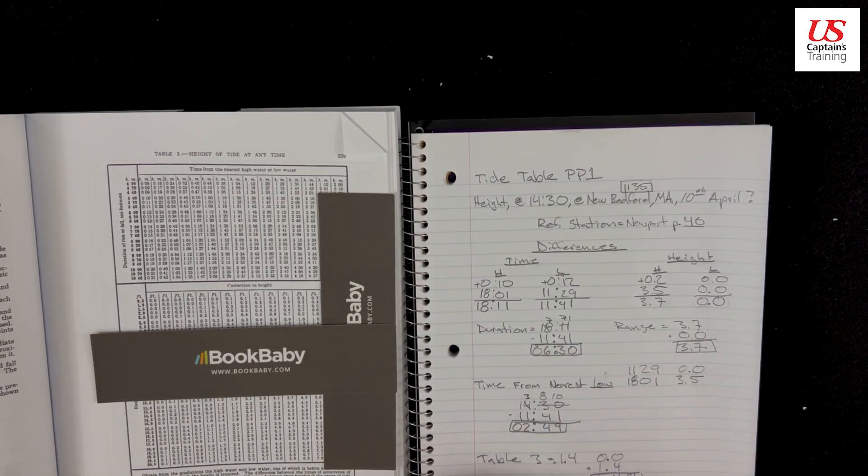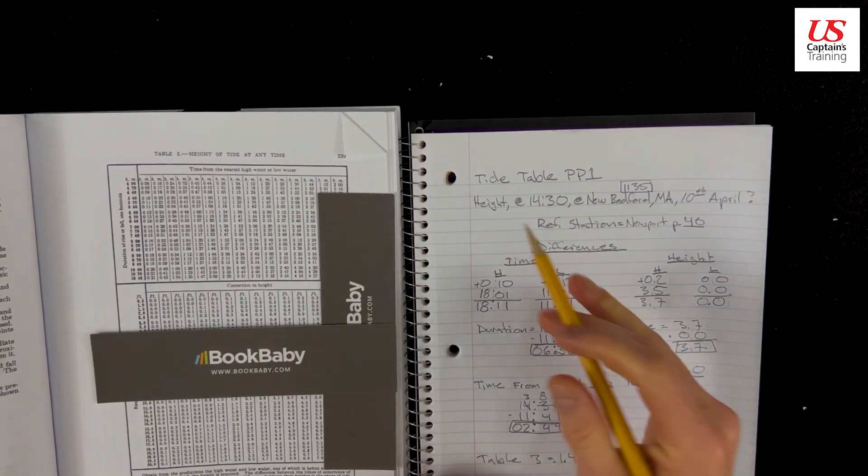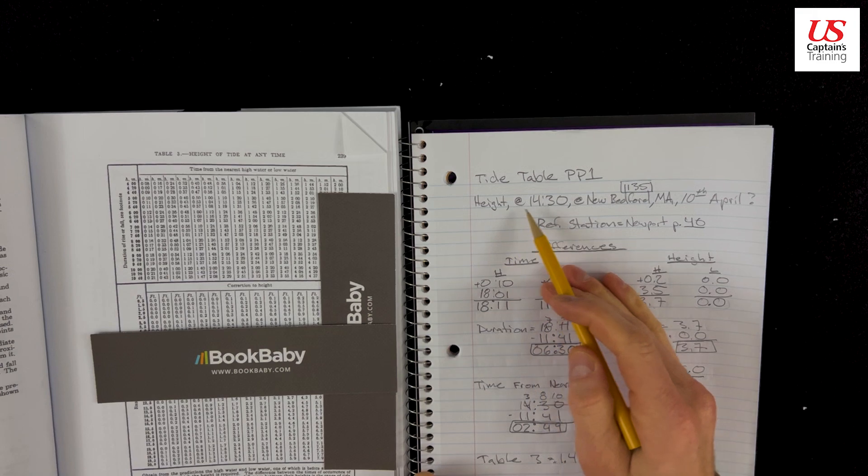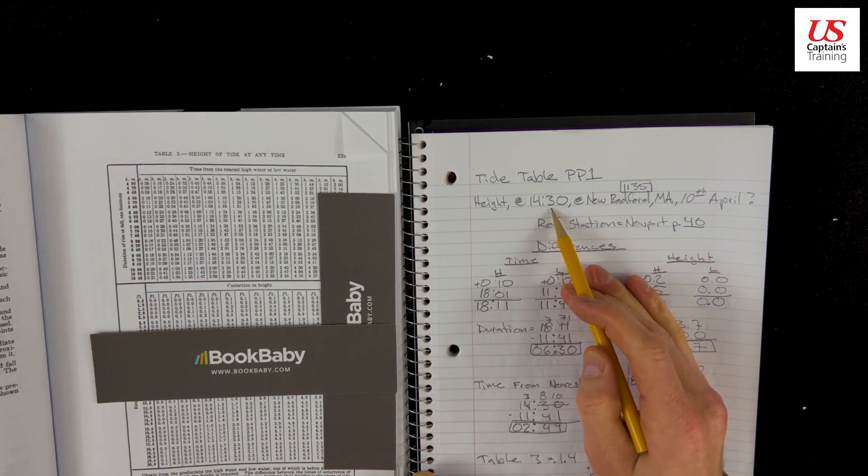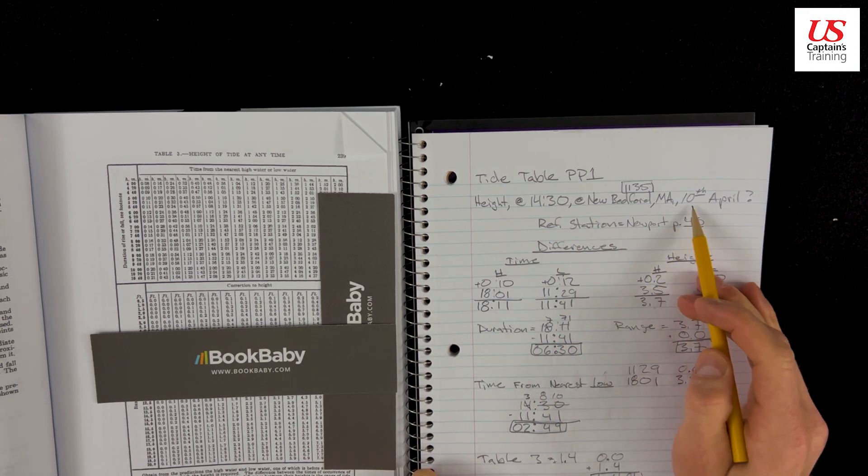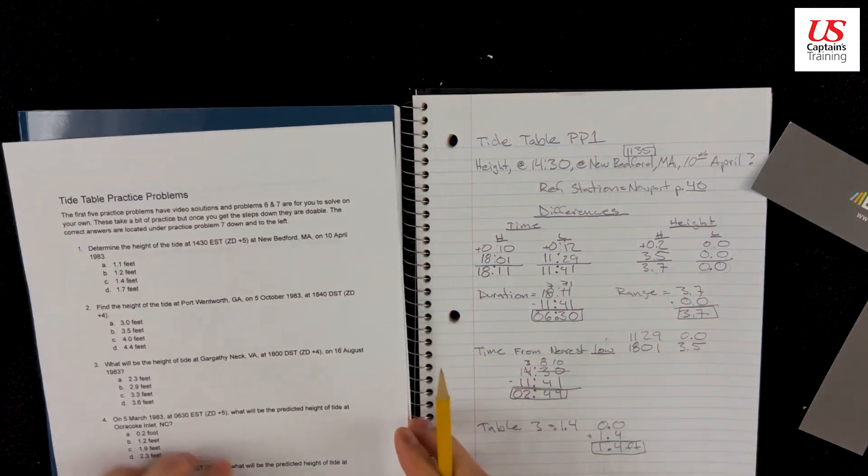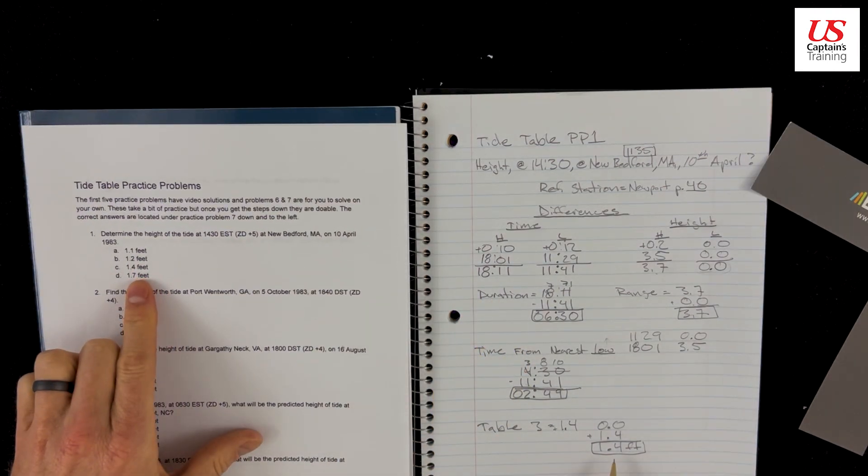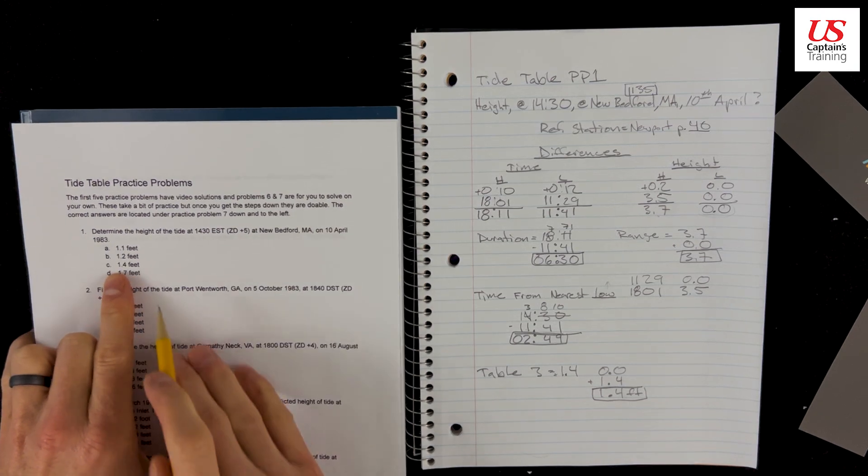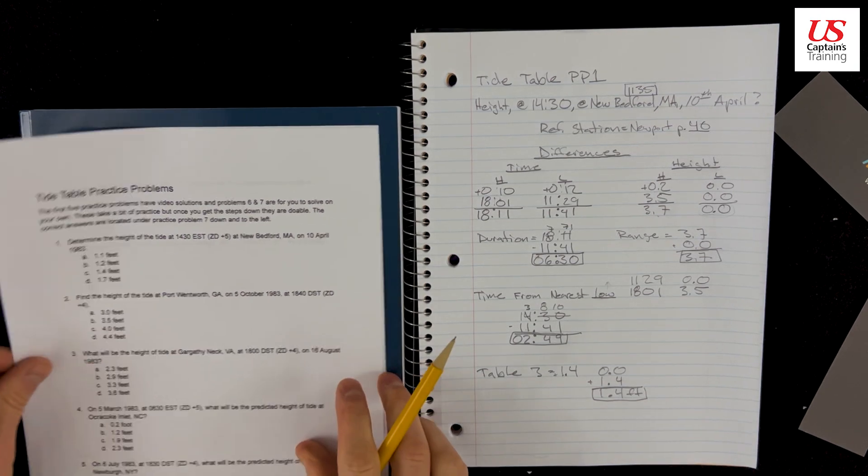Right, 1.4 feet is the height of the tide at 14:30 EST at New Bedford, Mass, 10th of April. And then we check, right? Here's 1. We got 1.4, 1.4. Here's 1.4C. And we check. Boom, 1.4C. We got it right.